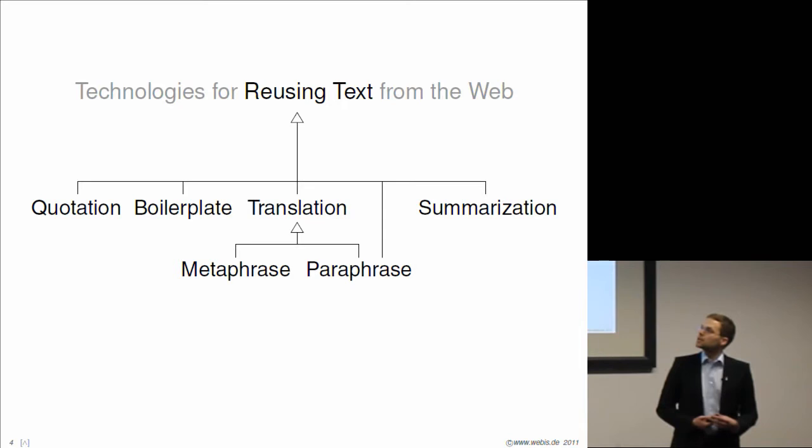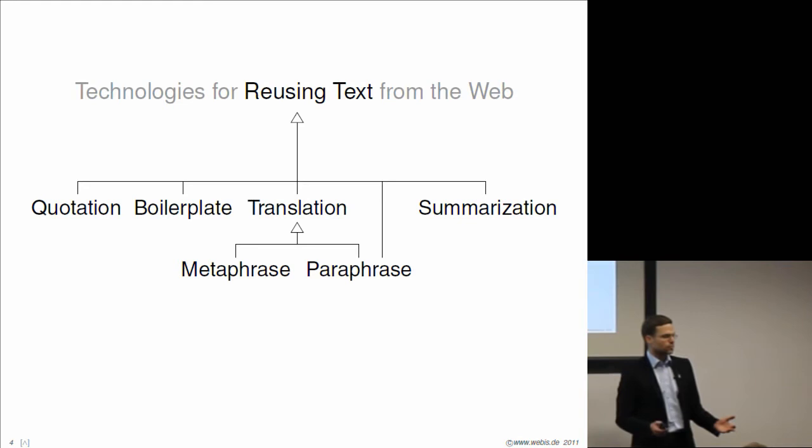First of all, there are quotations. We use quotations in science all the time. There is boilerplate text. Boilerplate text can be found in user license agreements of software, in legal documents, and in privacy notices everywhere on the web.